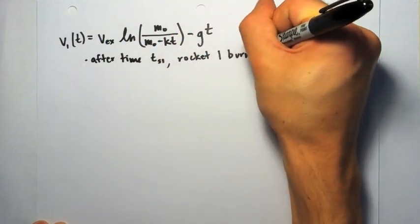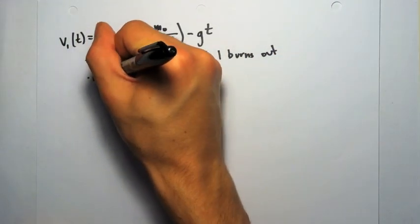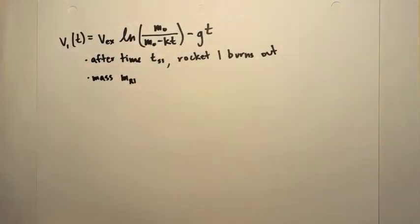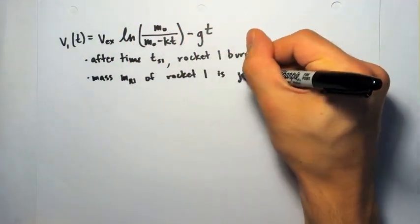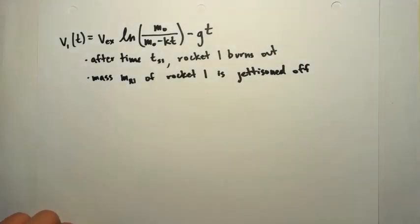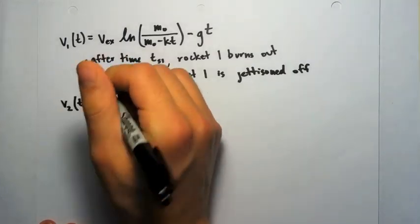So at time Ts1, at the end of stage 1, that denominator is the final mass of the stage. Also, at the end of stage 1, we're going to drop off the shell of rocket 1, just because it has extra mass. And so the initial mass for stage 2 is going to be a little bit different.